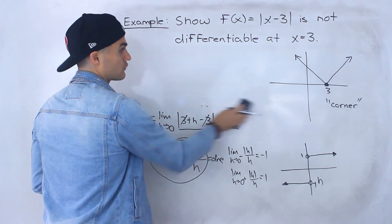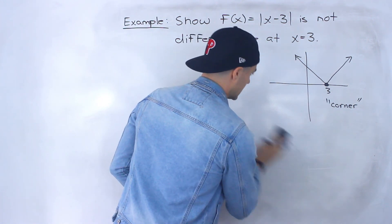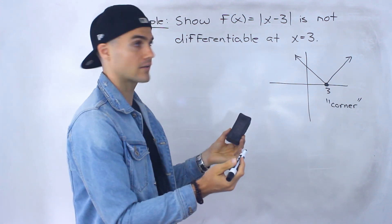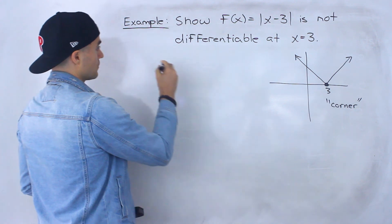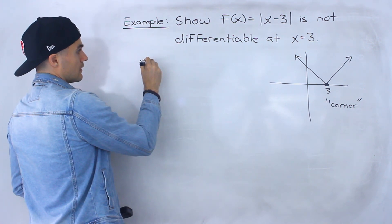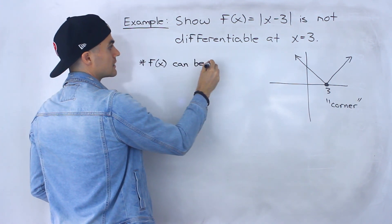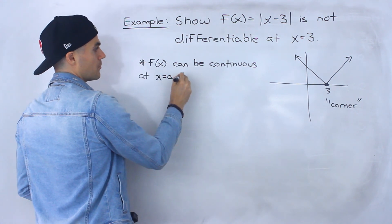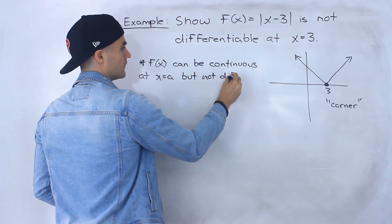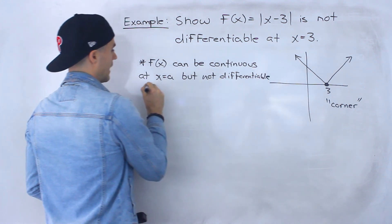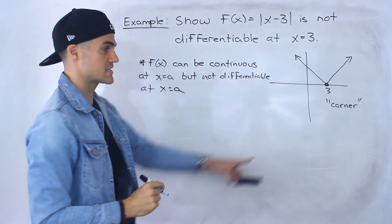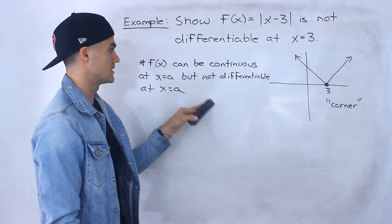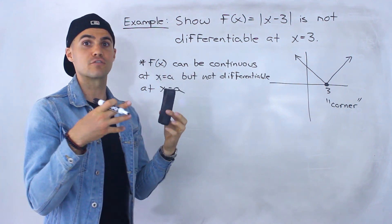One interesting thing to mention from this example: notice that the function is continuous at that x value of 3 — there is a y value there, which is 0. So an interesting observation is that a function can be continuous at an x value of a, but not differentiable there. This is a case where that can happen, and we'll go over other cases as well.